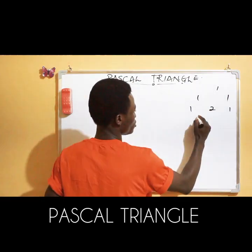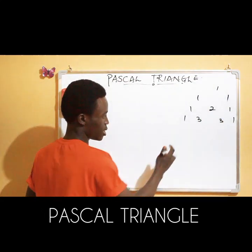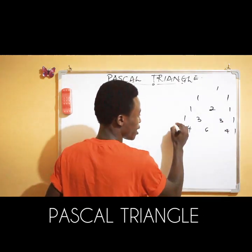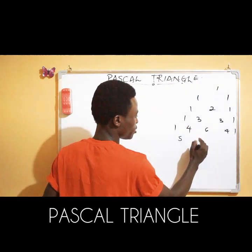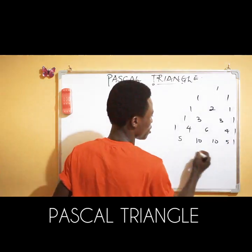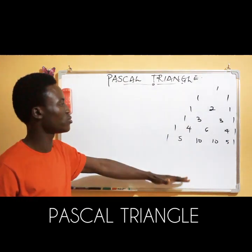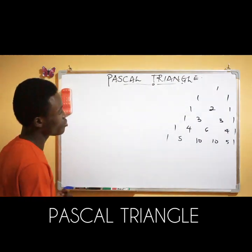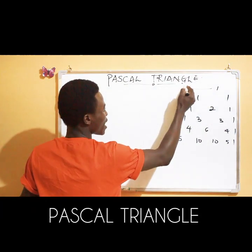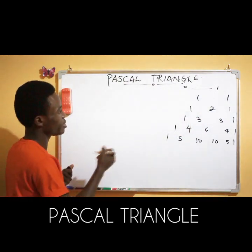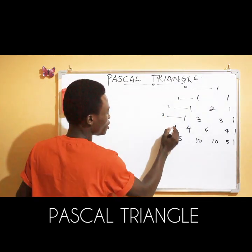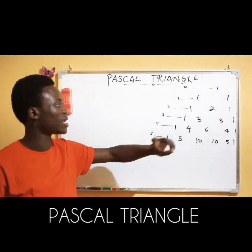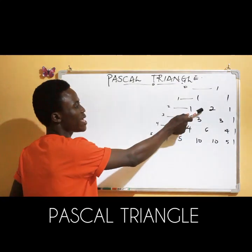Continuing: one plus two is three, two plus one is three — so the next row is 1, 3, 3, 1. Then one plus three is four, three plus three is six, three plus one is four — so the next row is 1, 4, 6, 4, 1. This is how you build Pascal's Triangle by adding adjacent numbers together to get the next row. The first row corresponds to power zero — that is why anything raised to zero equals one. The second number in each row indicates the power level.